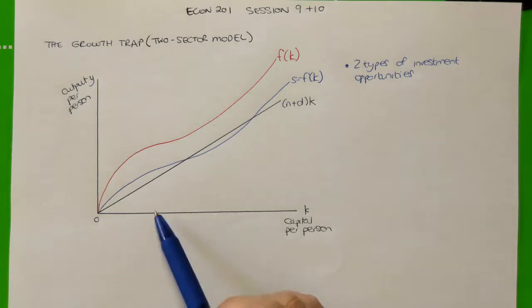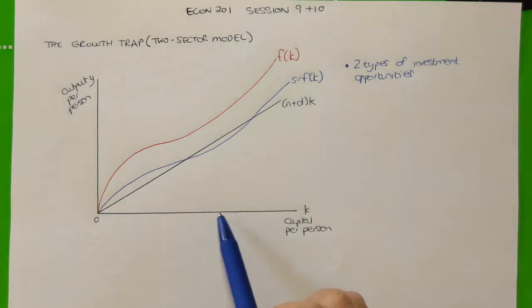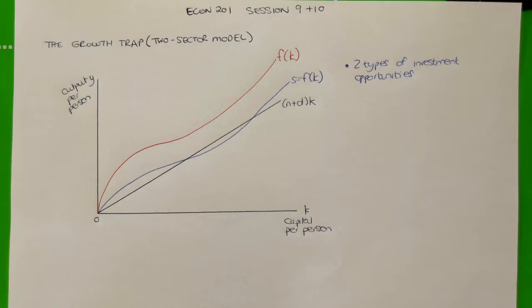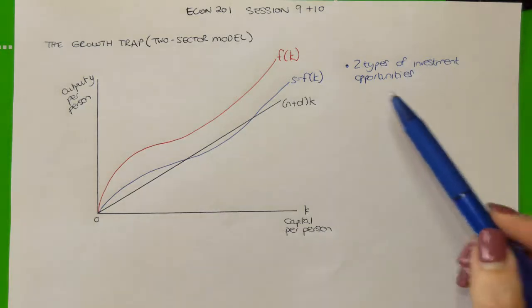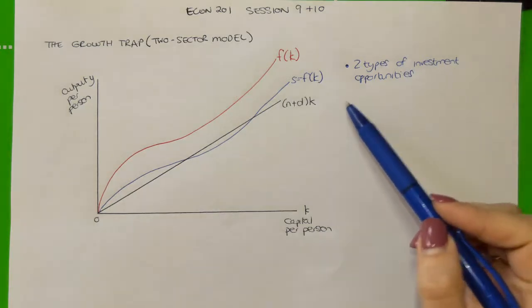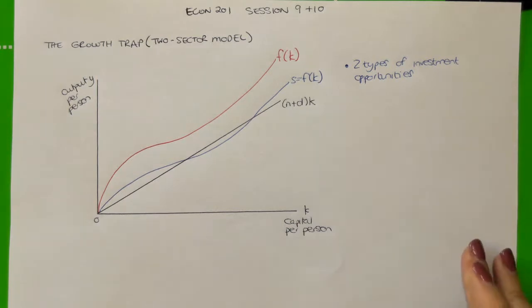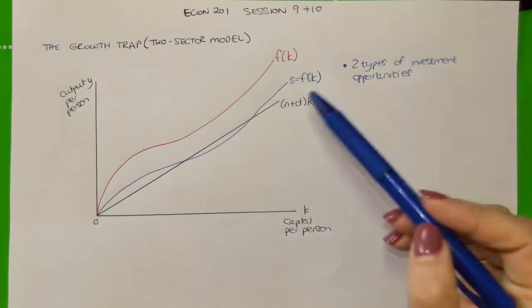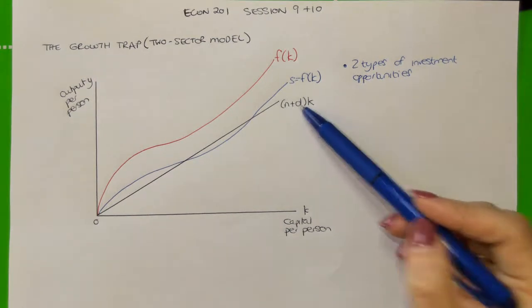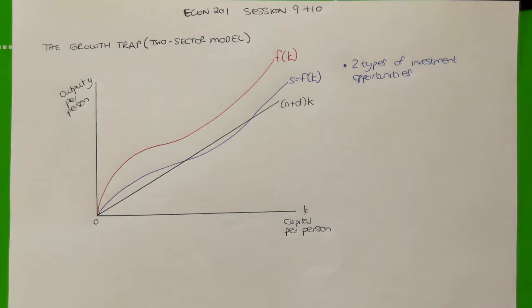As the capital-to-labor ratio increases, the amount of investment per person required increases to maintain the capital-to-labor ratio. Specifically, the investment requirement line recognizes that we need additional investment to offset the effects of an increasing population as well as the depreciation rate of capital.